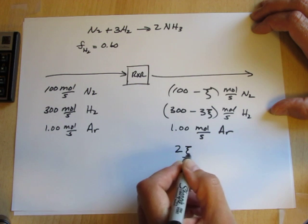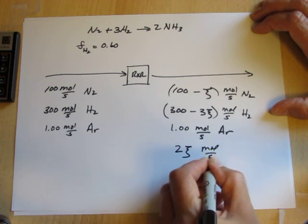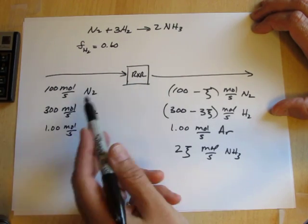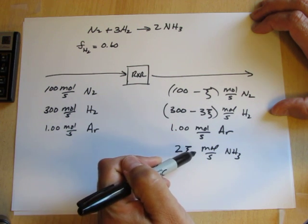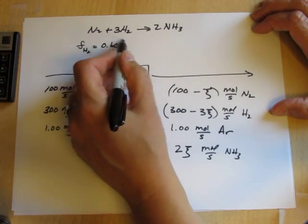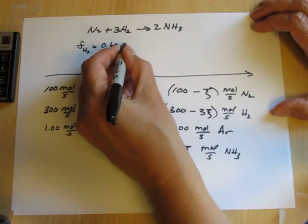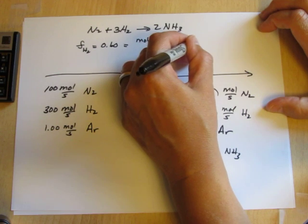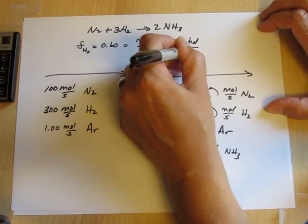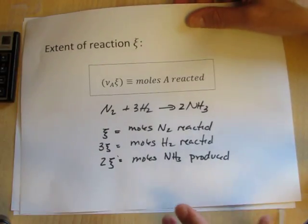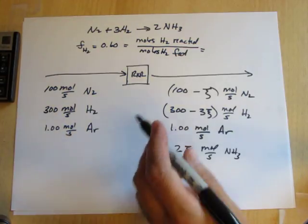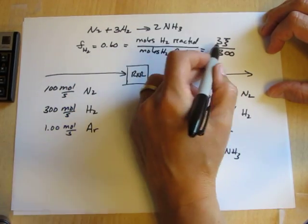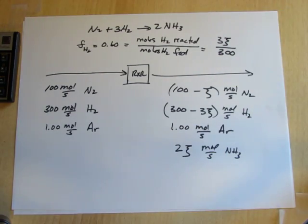Zero moles of ammonia went in, so zero plus 2Xi moles per second of ammonia come out. Argon is inert—it doesn't appear in the chemical reaction, so the same amount comes out as went in. We've now written all the mass balances on the species in the reactor, and all we need is the value of Xi. We'll get Xi from the fractional conversion: the moles of hydrogen reacted is 3Xi, and the moles of hydrogen fed is 300.